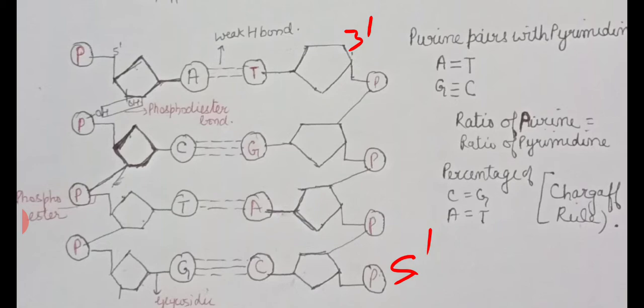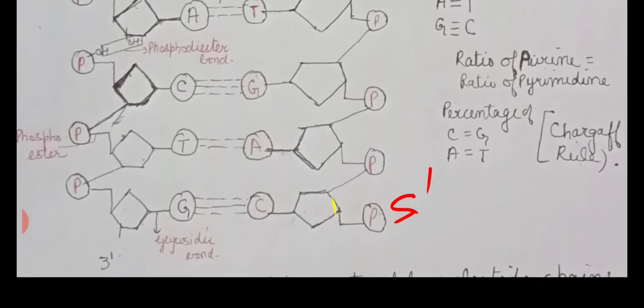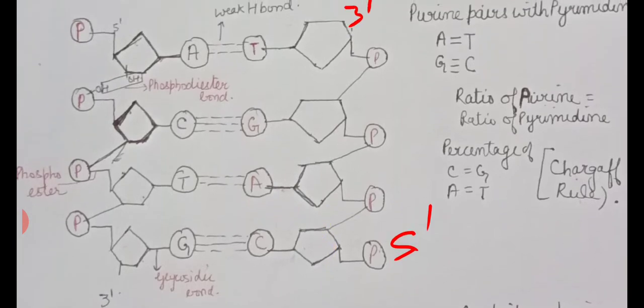The DNA thread length is described in base pairs. The number of nucleotides equals the number of base pairs. For example, if a DNA molecule has four bases, it is four base pairs long. This is the meaning of BP or nucleotide in terms of the length of DNA.